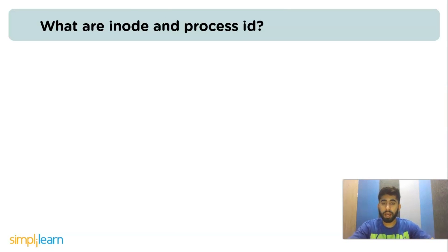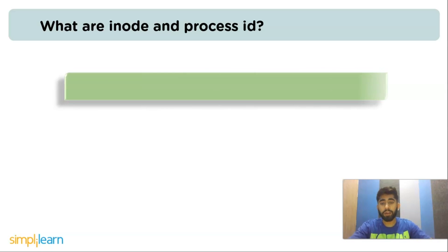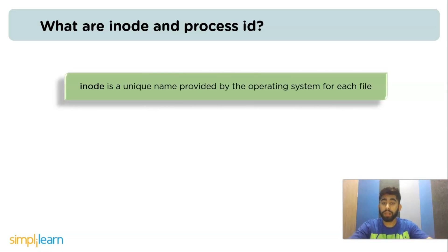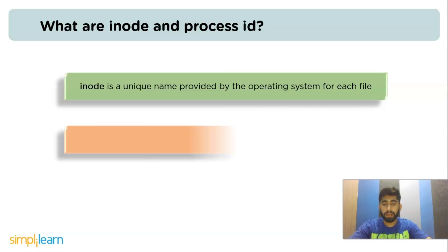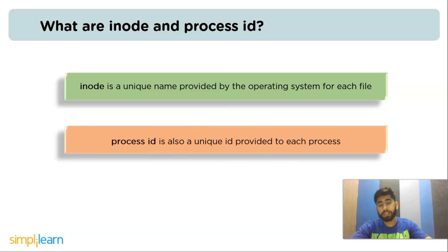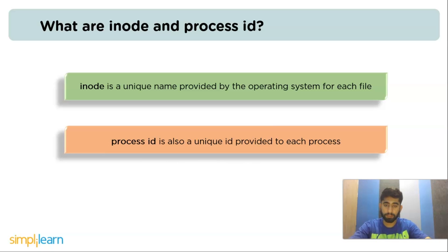The next question is: what are inode and process ID? An inode is a unique name provided by the operating system for each file. Similarly, a process ID is also a unique ID provided to each process.